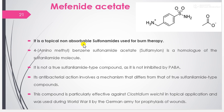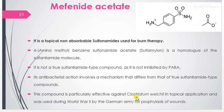The next drug is mafenide acetate, a topical, non-absorbable sulfonamide used for burn therapy. It is 4-aminomethylbenzenesulfonamide acetate, a homolog of the sulfonamide molecule. It is not a true sulfonamide-type compound as it is not inhibited by PABA; its antibacterial action involves a different mechanism. This compound is particularly effective against Clostridium welchii in topical application and was used during World War II by the German army for prophylaxis of wounds.